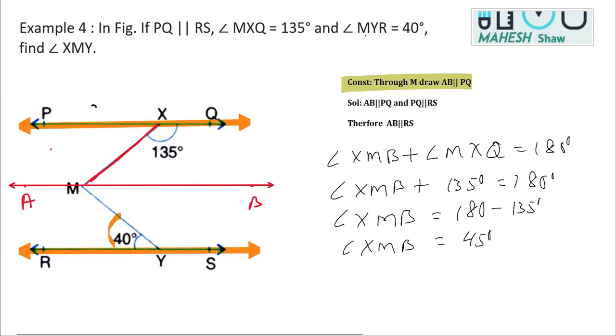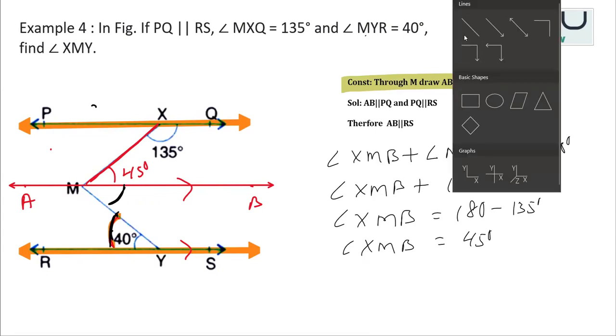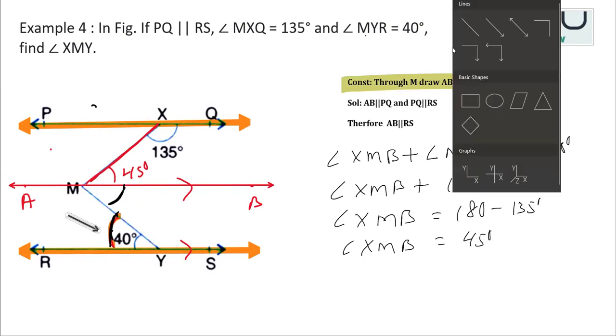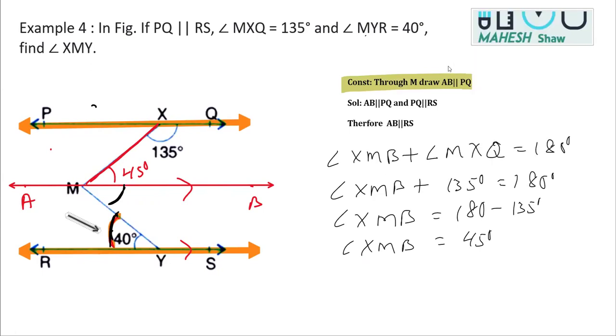So once we get this value as 45 degrees, now you can check, considering these two parallel lines, we can clearly see that these are forming alternate interior angles. It is clear from the figure that these two are making alternate interior angles, and alternate interior angles are equal.